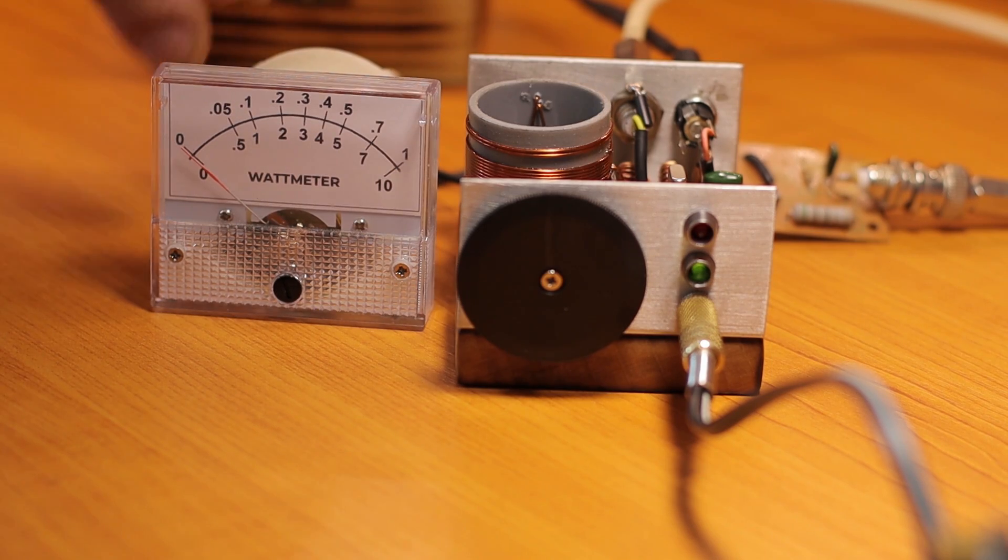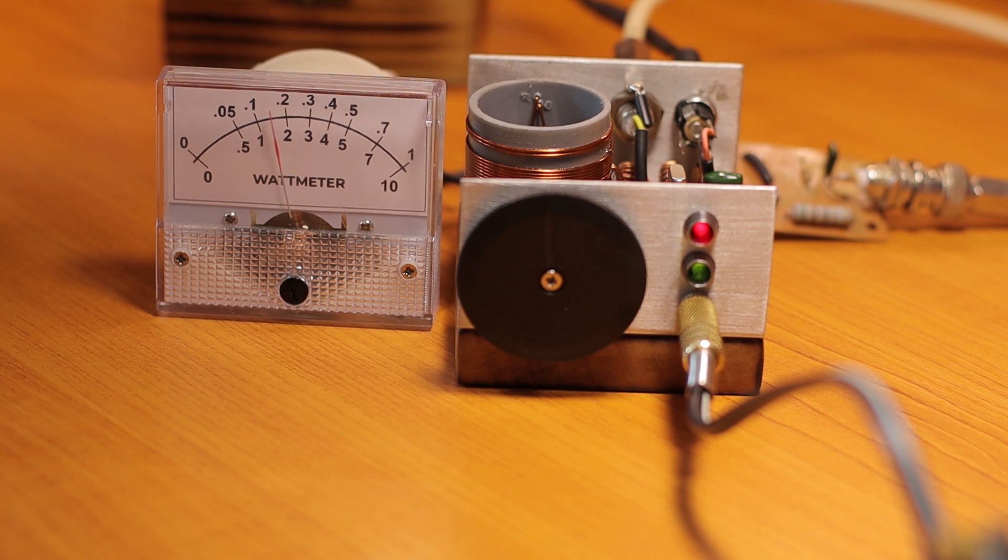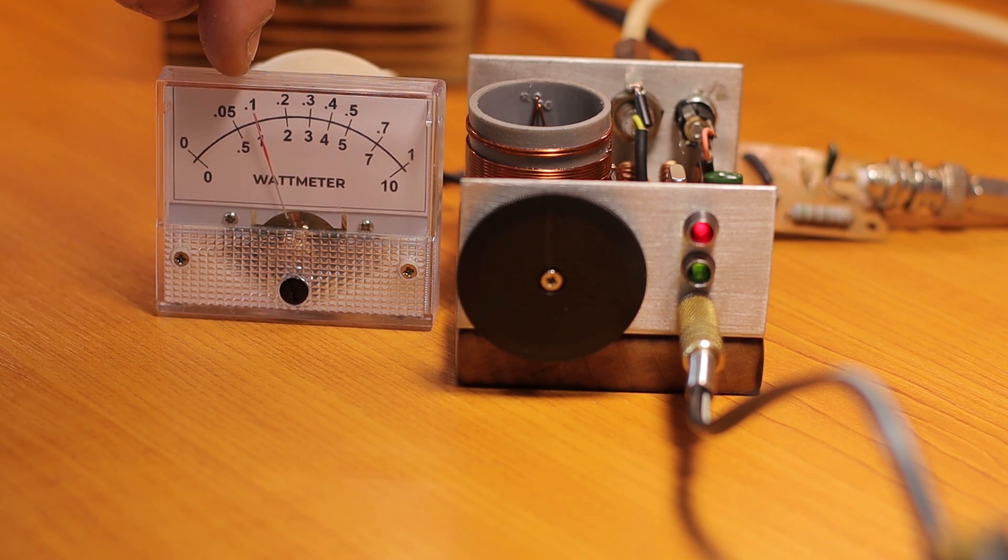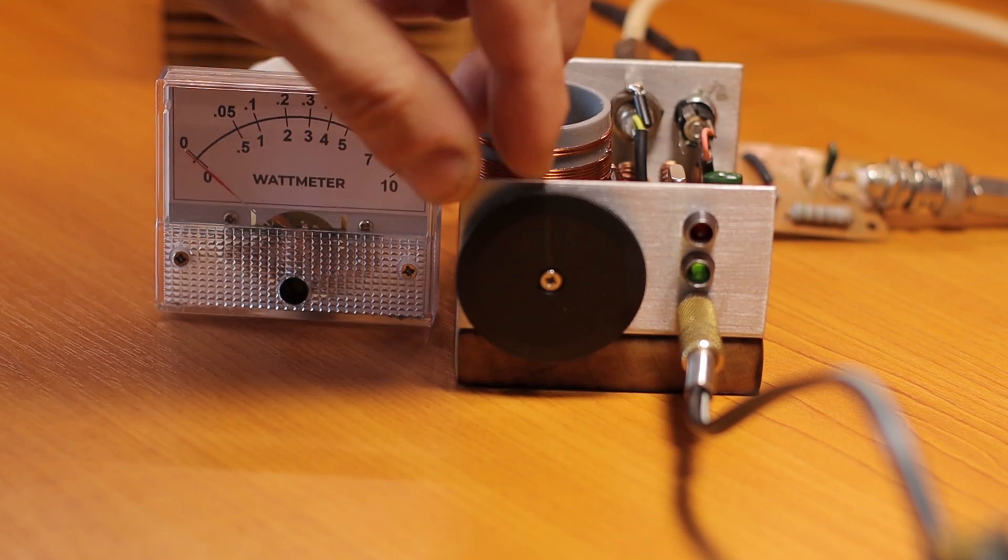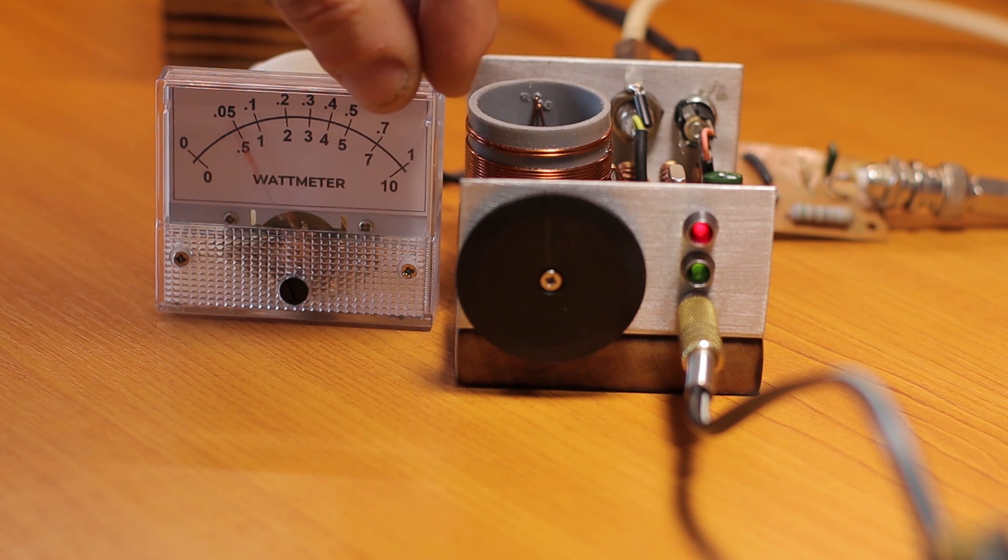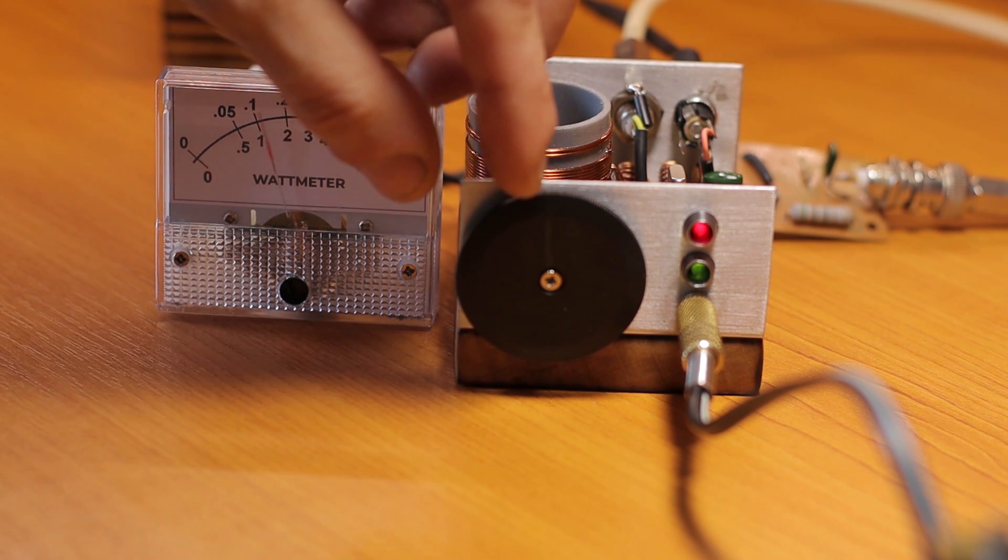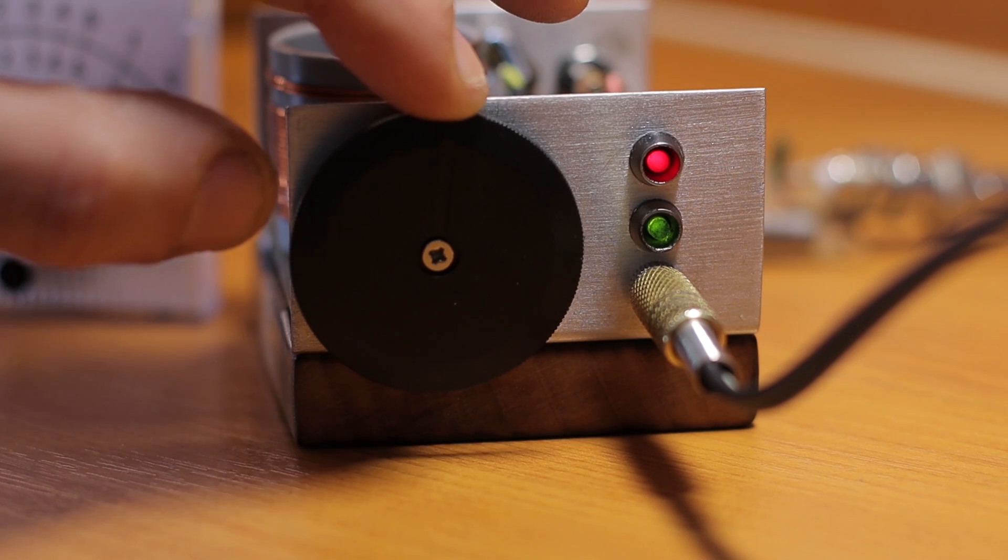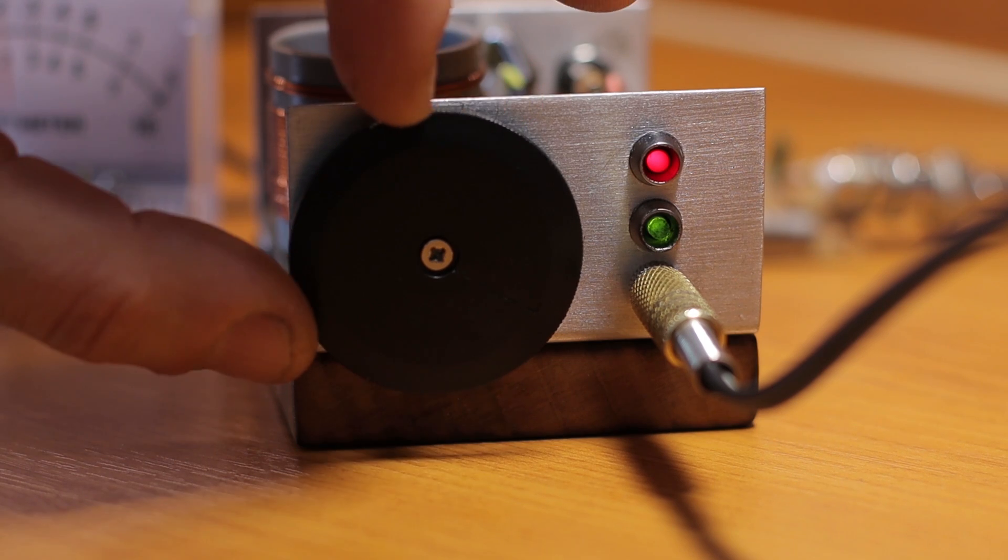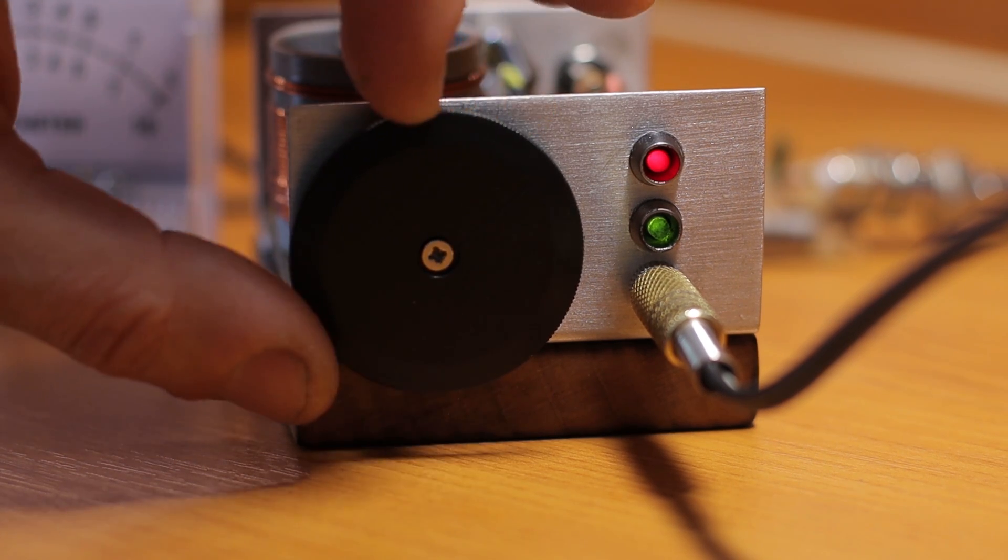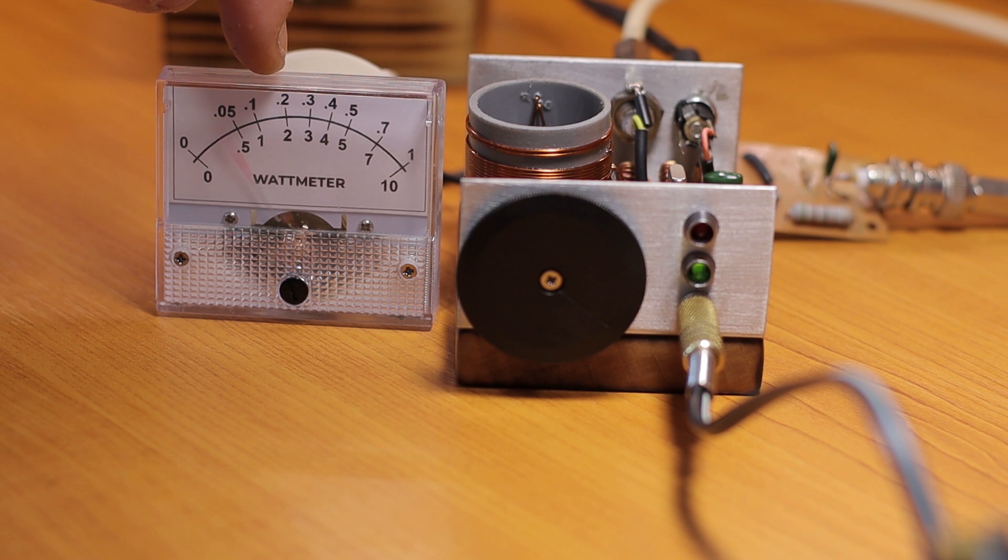All right, so we are going to key down the transmitter. It looks like I'm getting about 100 milliwatts power output with the capacitor all the way down. If you take a look at the red LED, the more I turn the variable capacitor the LED will turn brighter. It looks like here is the brightest spot. If I look on the wattmeter it's showing me about 200 milliwatts. I guess that's all I can get with this one.